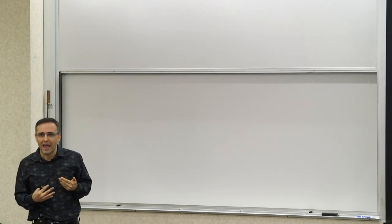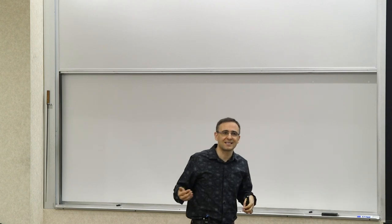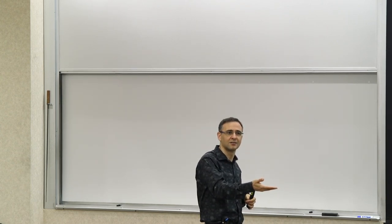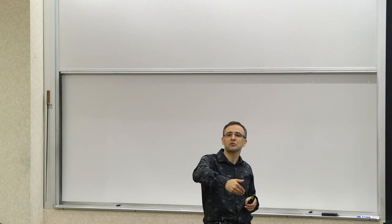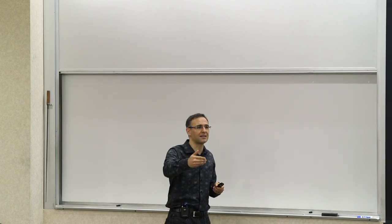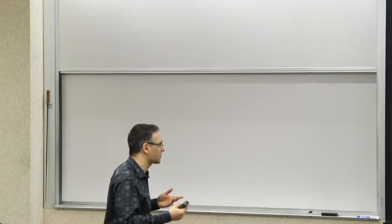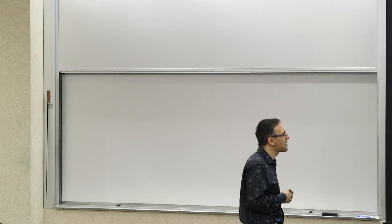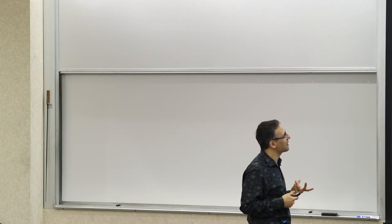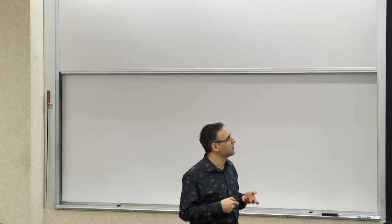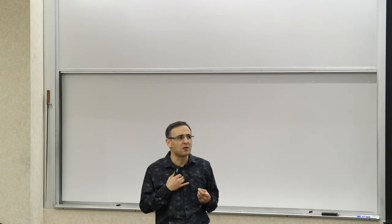Another common application is clock recovery. When you have digital data coming in, you don't want to send a separate line for the digital clock. You can use the PLL to recover the clock itself from the random data that's arriving — that's clock and data recovery. It's also used for clock distribution networks, timing control, and similar things. The basic block diagram of the PLL has a phase detector, a loop filter with transfer function H(s), a voltage-controlled oscillator, and a frequency divider.